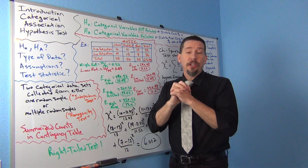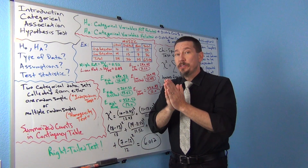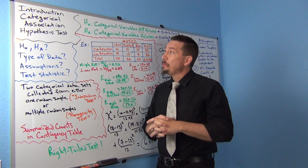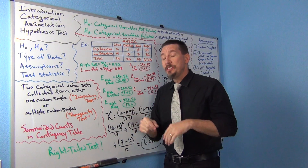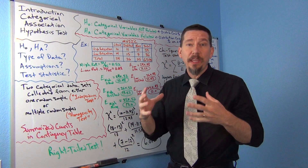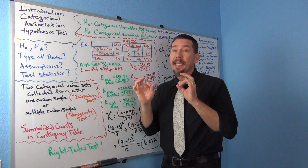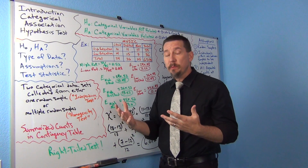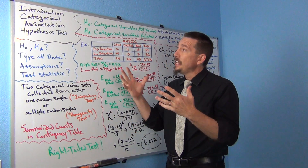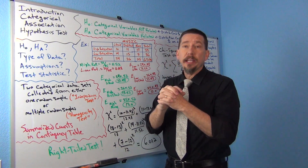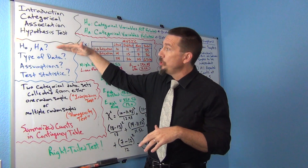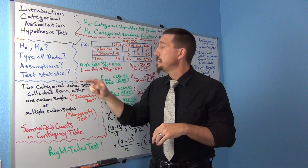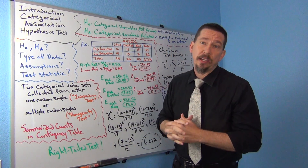Hi everyone, this is Matt Toucheau with IntroStats and today we're introducing the Categorical Association Hypothesis Test. The Categorical Association Test is one of those famous relationship tests — the classic Categorical Relationship Test. If you're trying to see if two categorical datasets indicate a relationship between variables, this is the test. We'll cover the null and alternative hypothesis, what type of data we need, the assumptions, and what test statistic we'll use.